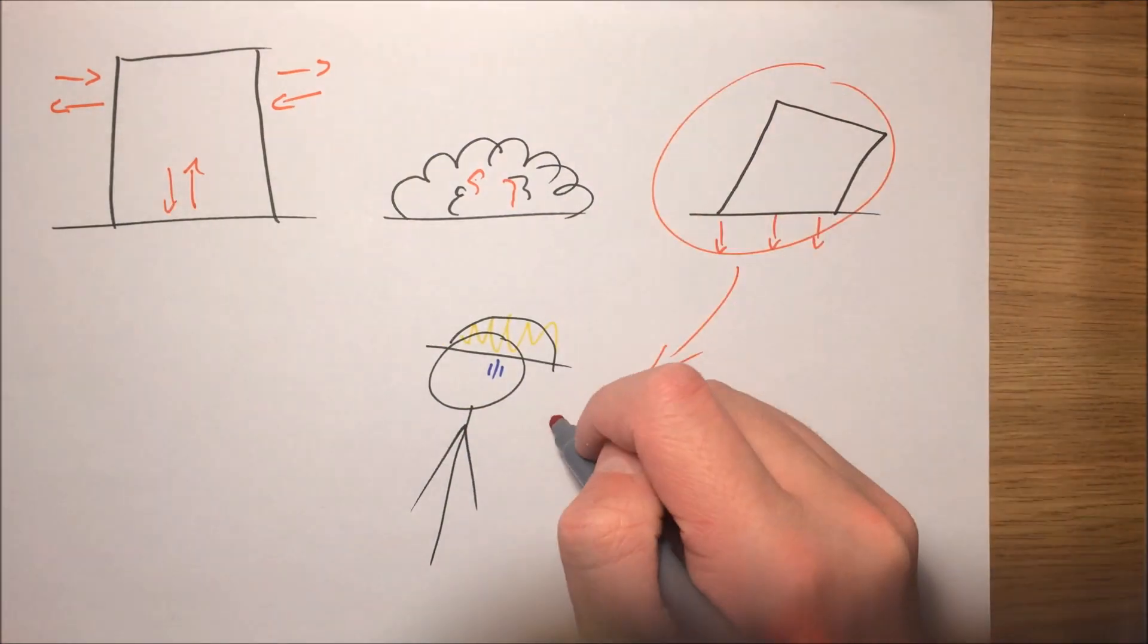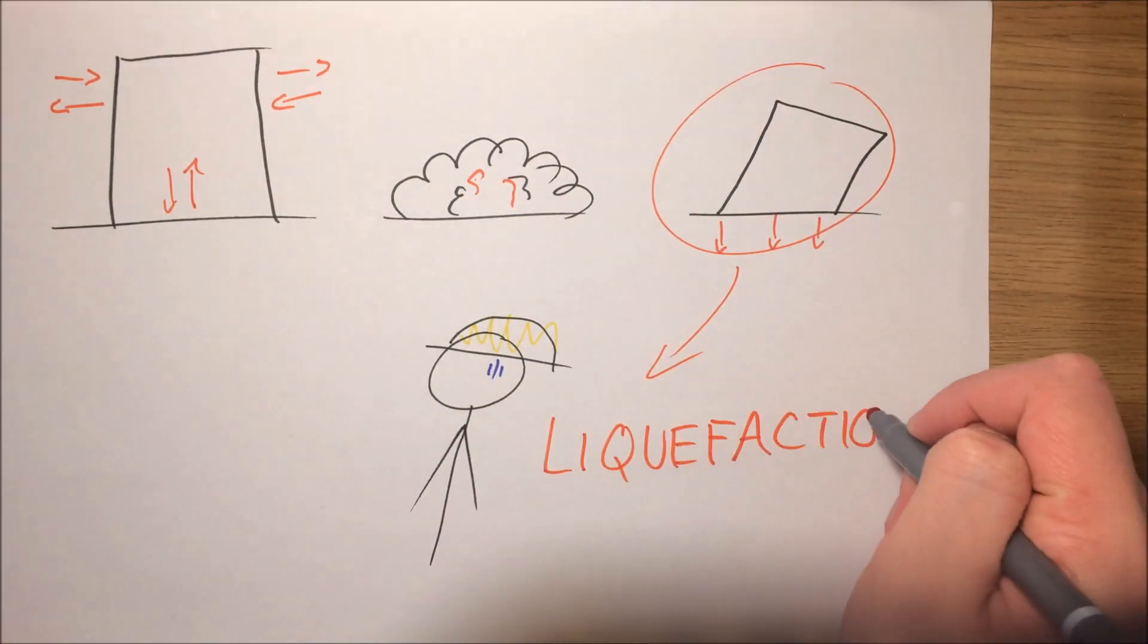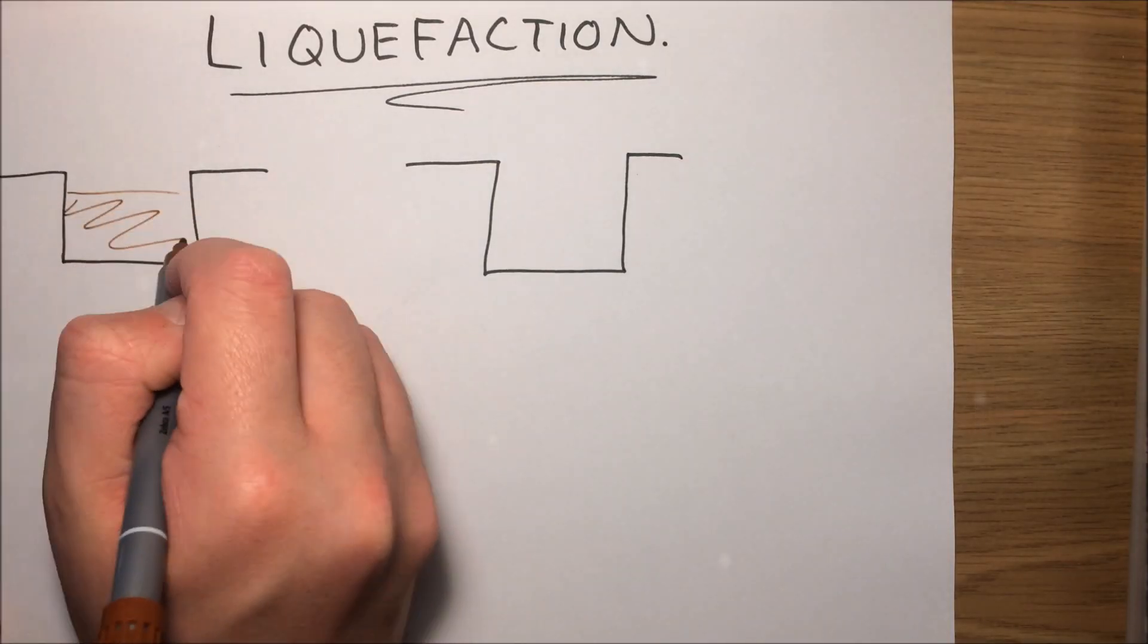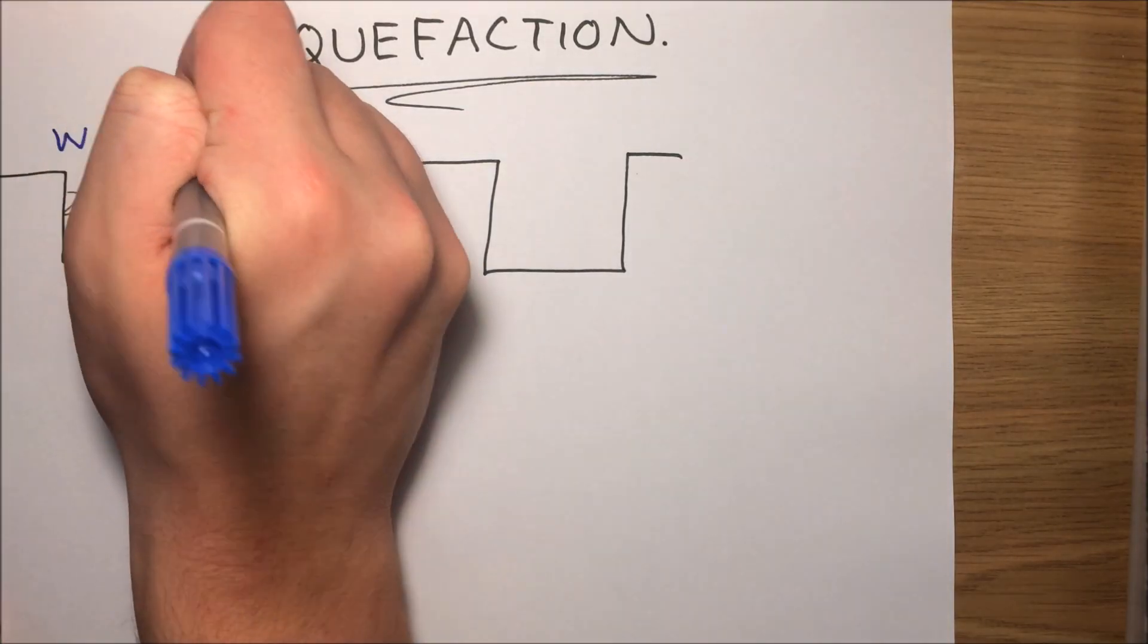Buildings sink thanks to a process known as liquefaction. Liquefaction occurs when water logs loose soil known as sand into quicksand temporarily.